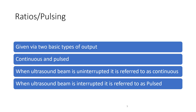Now let's look at the pulse ratio. This determines the concentration of energy on a time basis — specifically, the proportion of time that the machine is on compared with off time. A pulse ratio of one to one means the machine delivers one unit of ultrasound followed by an equal duration of no energy, giving a duty cycle of 50%. A machine pulsed at one to four delivers one unit of ultrasound followed by four units of rest, so the machine is on for 20% of the time.